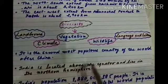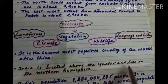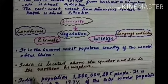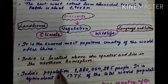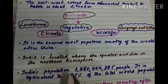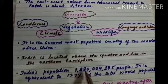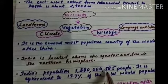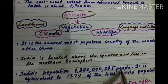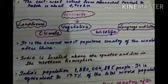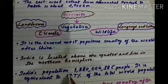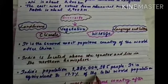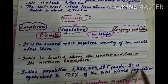India is located above the equator and lies in the northern hemisphere. India's population is about 1,380,438,500 people, which is equivalent to 17.7 percent of the total world population.